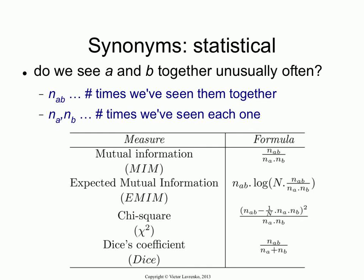And then I have similar counts for A by itself and a count for B by itself. It's critical that you get those in the same way. So if the counts of A and B are based on a 10-word window, then the count of A has to be based on a 10-word window as well. Be consistent in however you compute them.